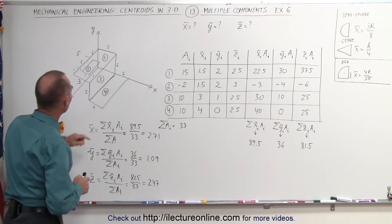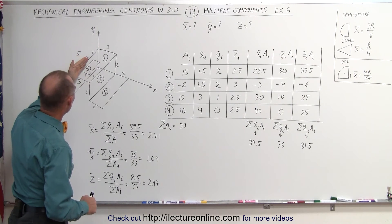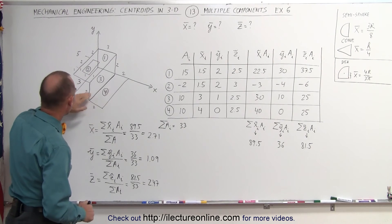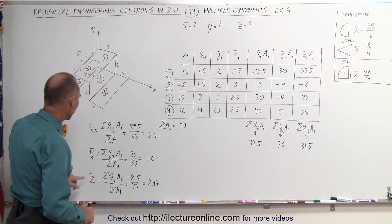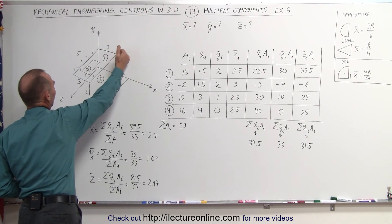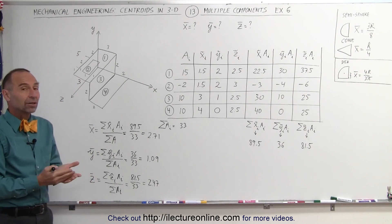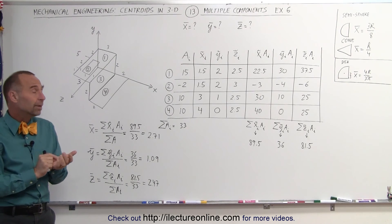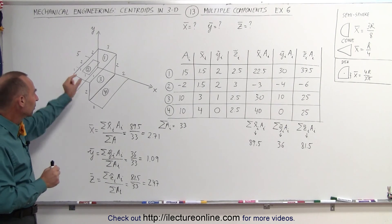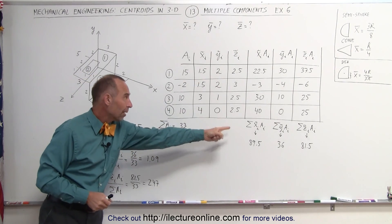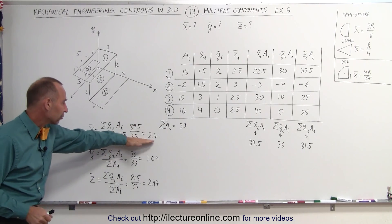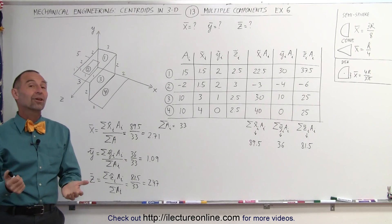So checking where the centroid would be: in the x-direction, that's 2.71 units away from the y-z plane. In the y-direction, that's 1.09 — just slightly above one unit above the x-z plane. In the z-direction, 2.47 — that's almost at the halfway point from the x-y plane into the z-direction. And that's how we find the centroid of any object: split it into individual pieces, find the centroid of each piece in x, y, and z, find the area of each piece, then divide the sum of the products of each coordinate times its area by the total area. That gives you the x, y, and z-coordinates of the centroid.